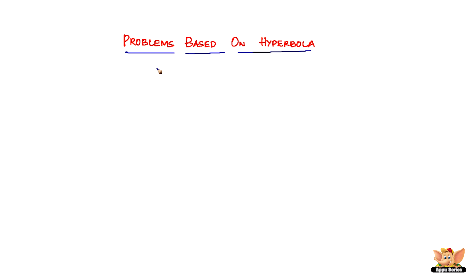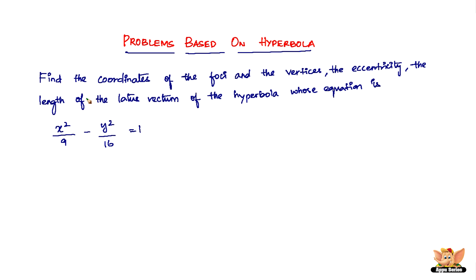In this video, let us solve problems based on hyperbola. Here we are. We've got the question which says, find the coordinates of the foci and the vertices, the eccentricity, the length of the latus rectum of the hyperbola, whose equation is x squared by 9 minus y squared by 16 equals 1.